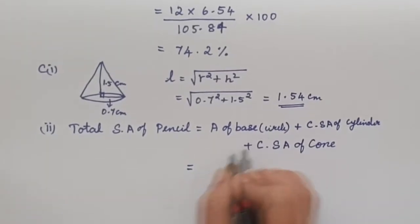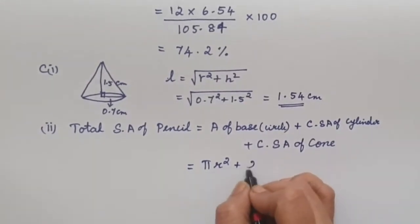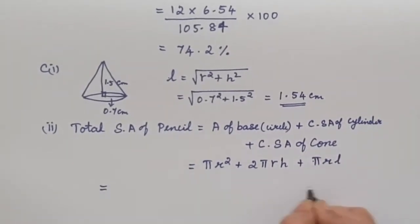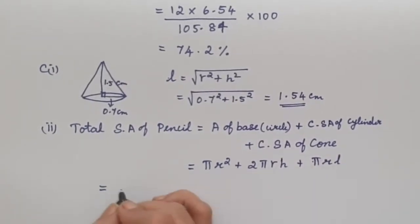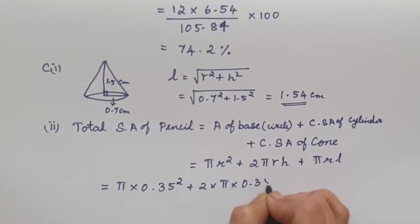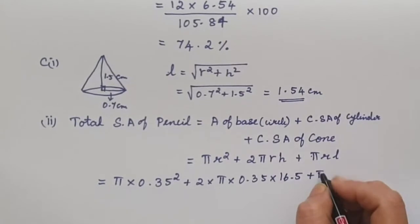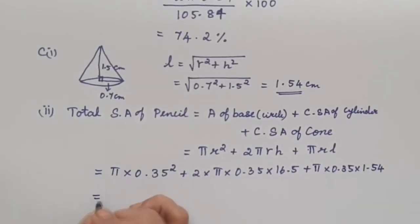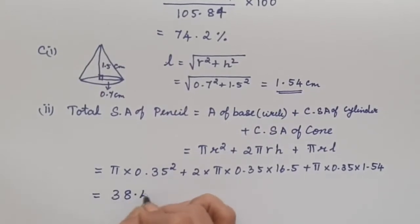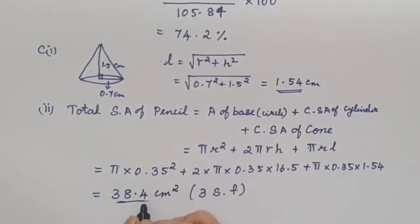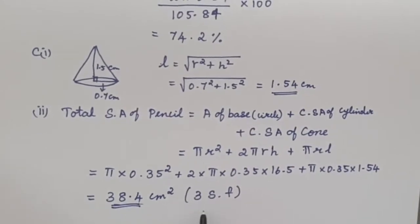Writing out the formulas: for the circle it is πR², the curved surface area of the cylinder is 2πRH, and for the cone it is πRL. Substituting all values: π × 0.35² + 2π × 0.35 × 16.5 + π × 0.35 × 1.54. Using the calculator, we get 38.4 cm². Since they require 3 significant figures, you must write only to 3 significant figures — writing more or fewer will result in marks being deducted.